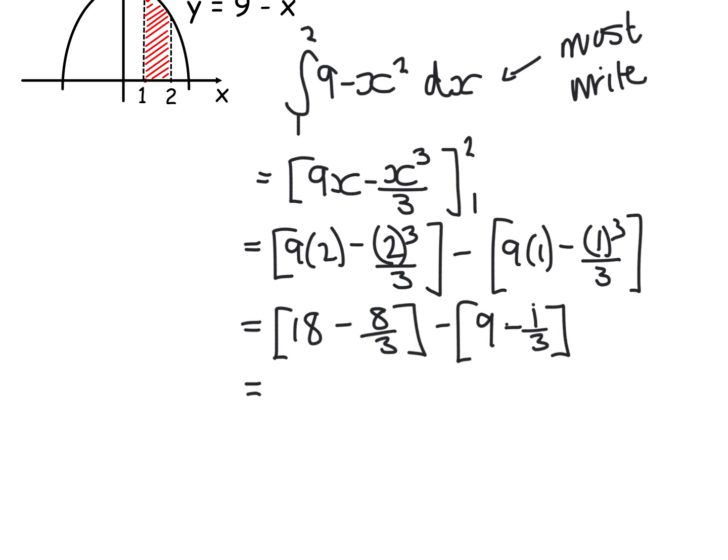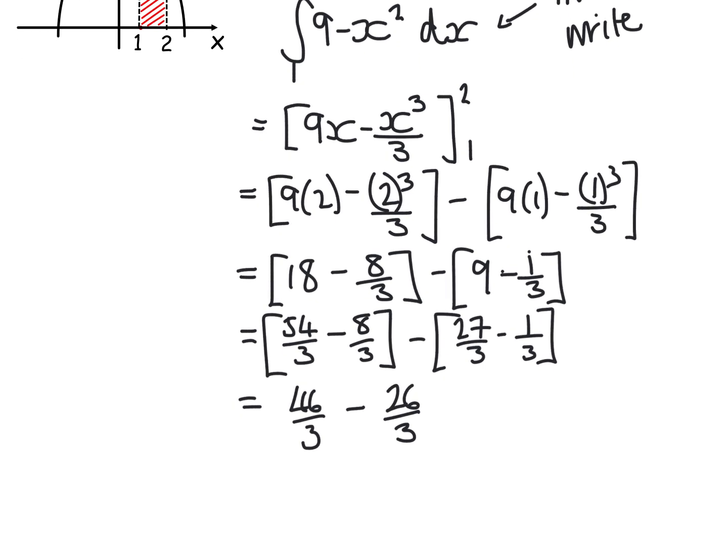I'm going to test our fraction work here. Now, there are different ways of doing it, people like working with mixed fractions. I like to keep everything top-heavy. So that 18 into thirds would be 3 times 18, which is 54 thirds, take away 8 thirds. And then that 9 all into thirds would be 27 thirds, take away 1 third. So I have 46 thirds for the first bracket, take away 26 thirds for the second bracket, which gives me a total of 20 thirds.